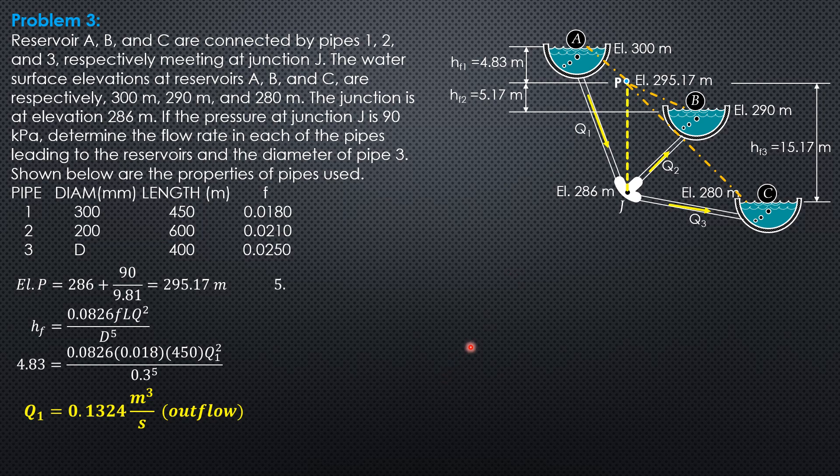Then HF2. 5.17 equals 0.0826, friction factor 0.021, length 600, Q2 square over diameter 0.2 to the 5th. So Q2 is inflow, 0.03987 cubic meter per second.